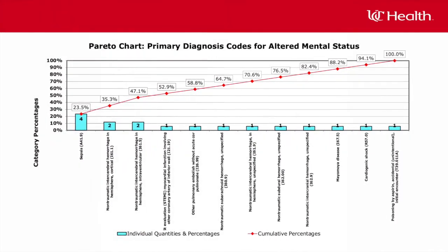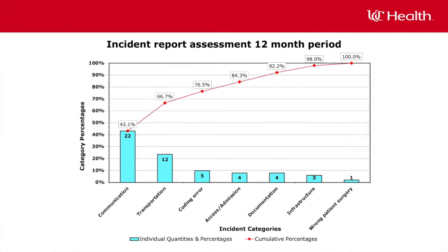Not all Pareto charts will highlight the major causes for failure in a process. Some are fairly flat and demonstrate that there is no clear major cause or reason. Sometimes a flat Pareto is indicating a need to group your causes differently or find a different way to analyze your data. This hypothetical Pareto chart on incident report assessments shows that nearly 80% of the incidents were communication, transportation, and coding errors.